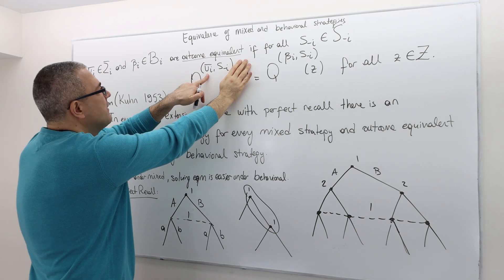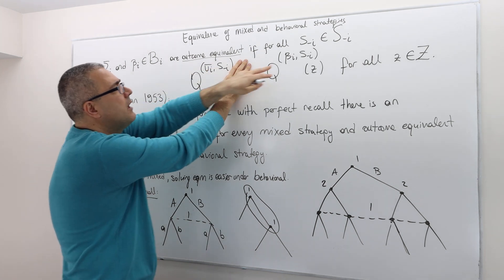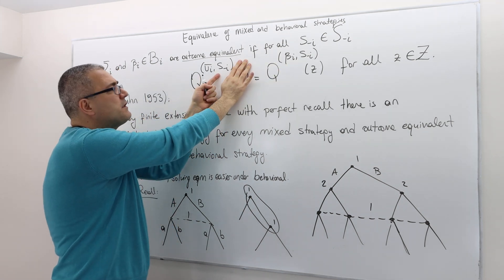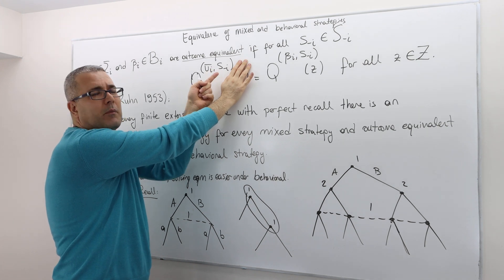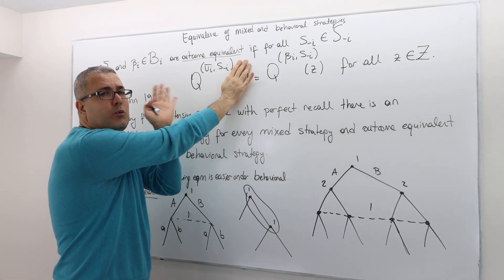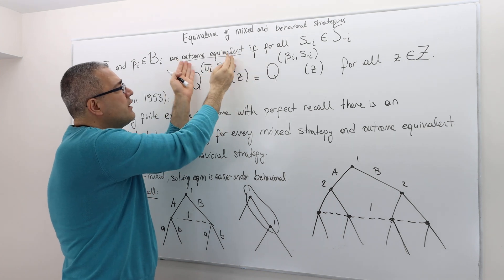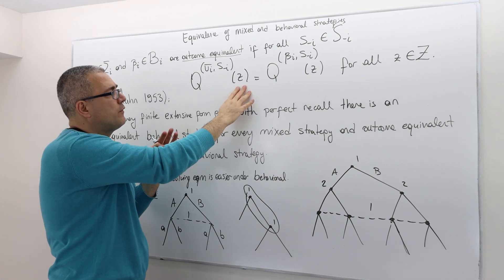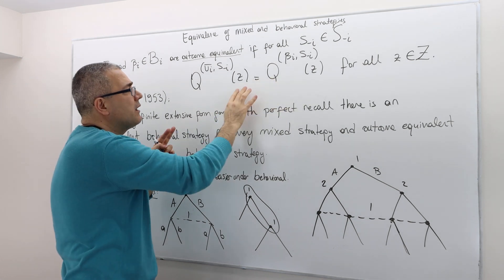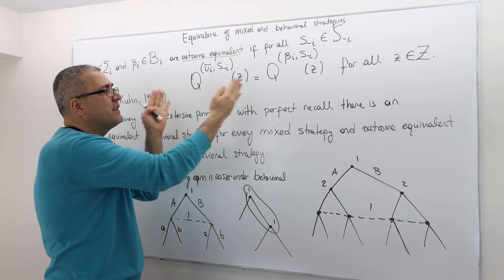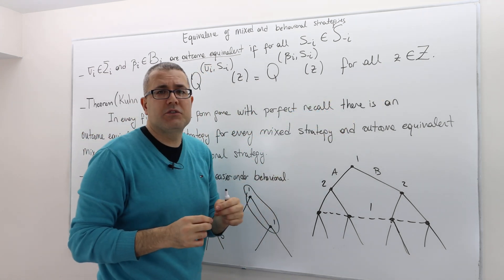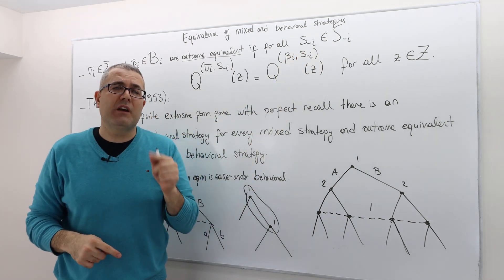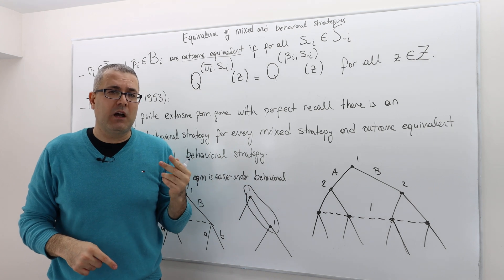Let's say player I plays his mixed strategy on the one hand, plays his behavioral strategy on the other. What about the other players? Let's fix the other players' strategy as S sub minus I, some pure strategy profile. Under those two profiles of strategies, calculate the likelihood of terminal history Z occurring. It has to be the same. And this equivalence must be true for any terminal history and for any pure strategy profile of the opponents of player I.